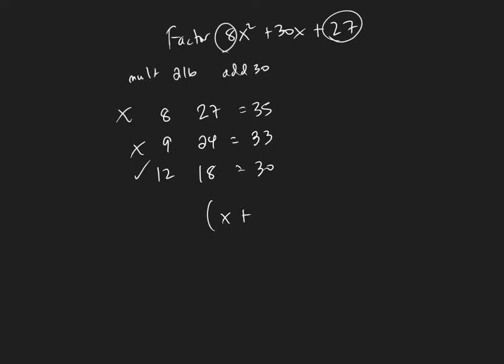I'm going to take x + 12, x + 18. Then I'm going to take the 12 and the 18, divide them by the x² coefficient. I'm going to simplify those fractions.